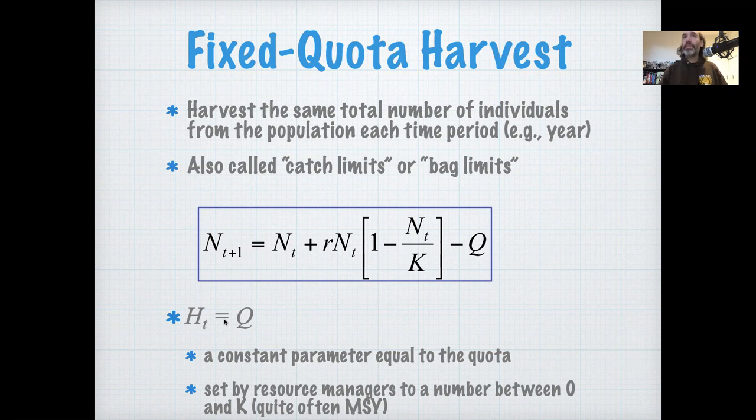Here we've decided that the simplest way of representing that harvest is to assume that it's constant through time. This is called a fixed quota harvest. This capital Q is quota. If the same number of individuals are harvested from the population over each time period, such as a year, these fixed quotas are sometimes called catch limits or bag limits, and they set upper bounds on the total number of individuals that can be harvested from a population, usually across different individuals who are participating in the harvest. So there needs to be some way of reporting how much each individual who's part of the harvest has taken at any point in time.